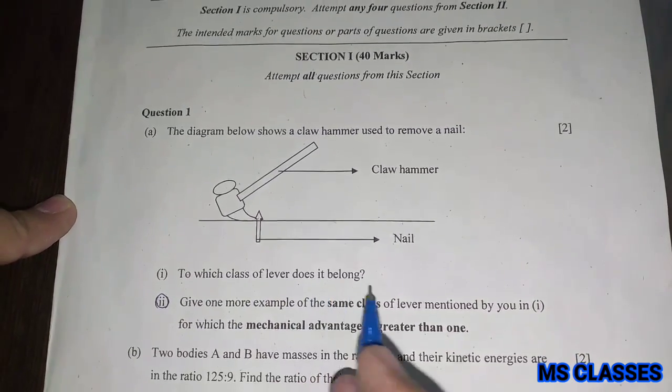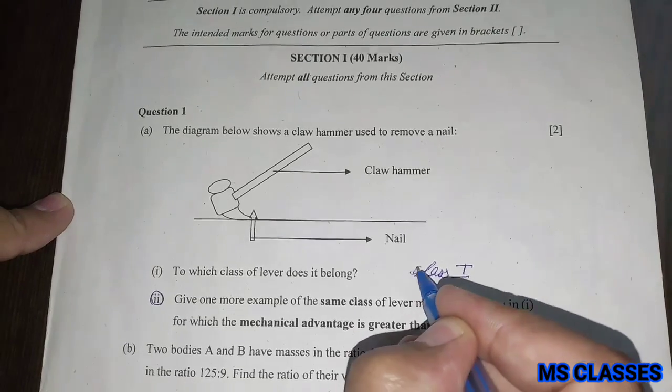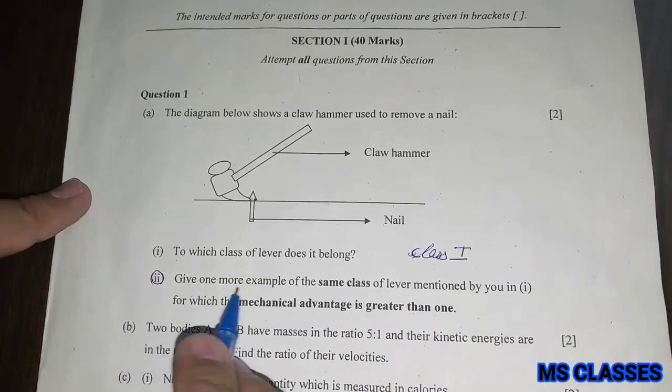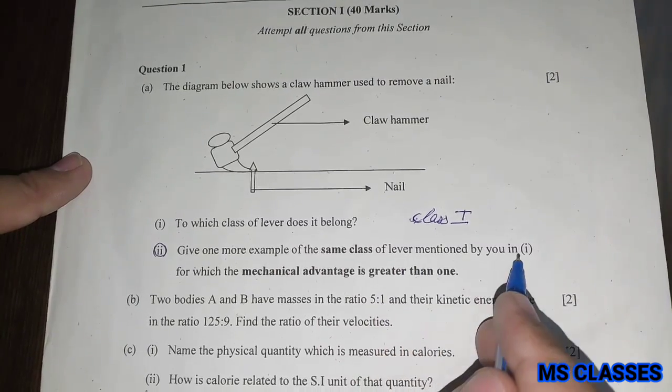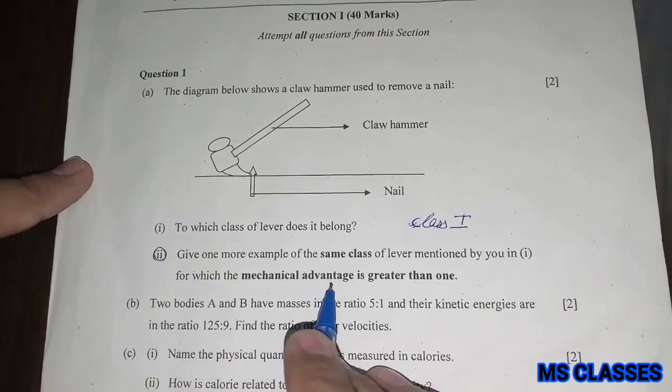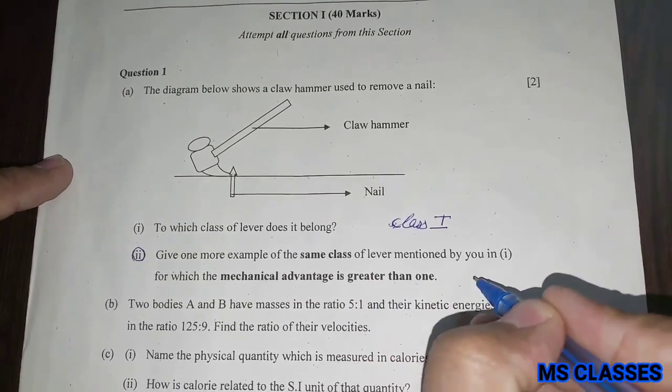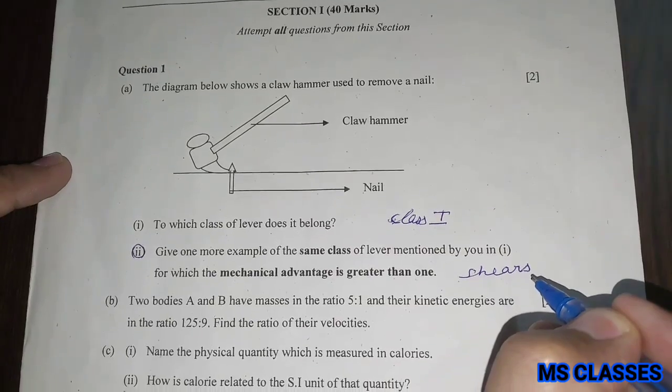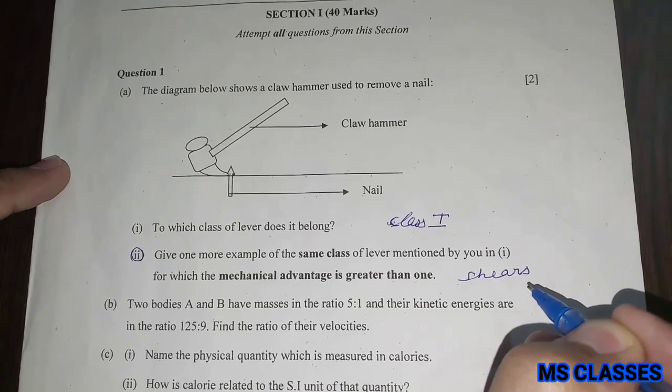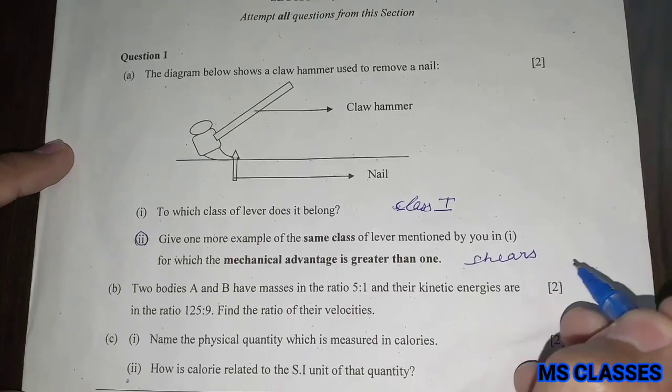To which class of lever does it belong? That is class 1 lever. Give one more example of the same class of lever mentioned by you in first part for which the mechanical advantage is greater than one. You can give the example of shears which is used for cutting thin metal sheets, which has much longer handles as compared to its blades.